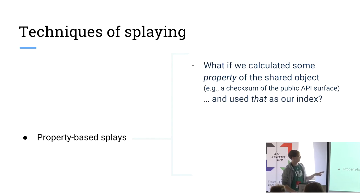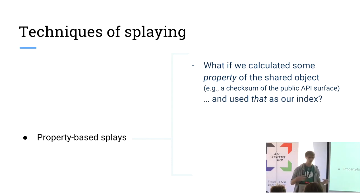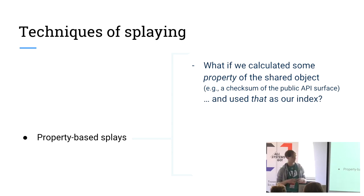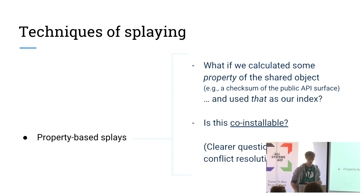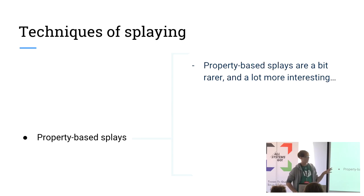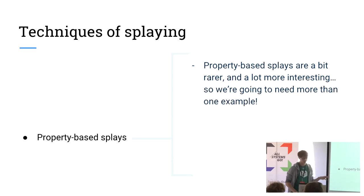The other most interesting category of things you can do is what I'm going to call a property-based splay. This is when you calculate some property of the libraries you're going to share and then use that as your index. Whether or not this is co-installable can be an interesting question, so we're going to go over a couple of examples.